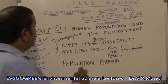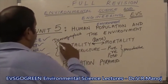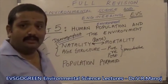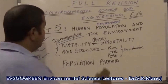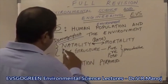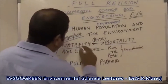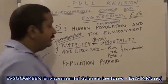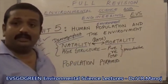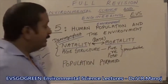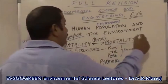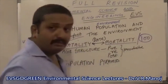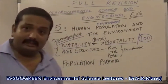The most important aspects of human population is the demographic part of the study of the human population, which is Natality and Mortality. Natality corresponds to the birth rate and mortality corresponds to the death rate per 100 people.